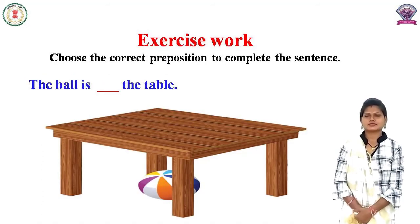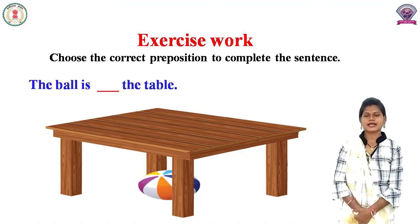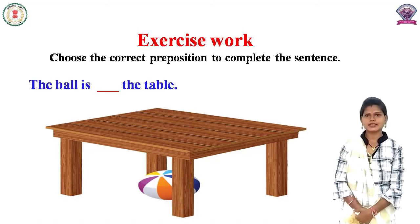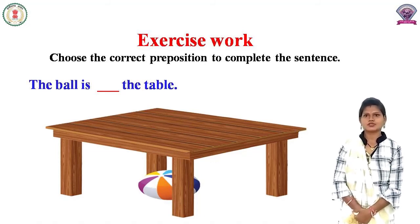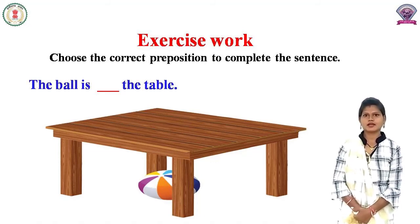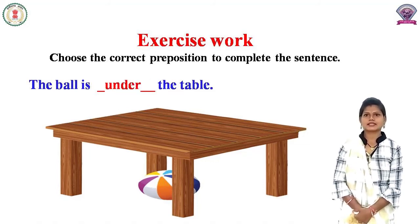Look at this picture. इस picture में देखिए आपको क्या दिखाई दे रहा है। Where is the ball? Ball कहाँ है? Ball जो है वो table के नीचे है। तो नीचे के लिए हम कौन सा preposition लगाएंगे? Under. The ball is under the table.